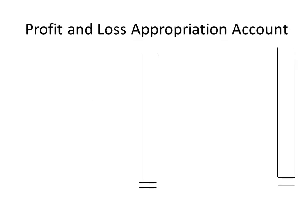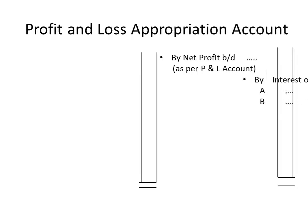The format of profit and loss appropriation account: on the credit side, the net profit is brought down as per the profit and loss account, and interest on drawings of partners. If there are two partners, both the interest on drawings will be written on the credit side.